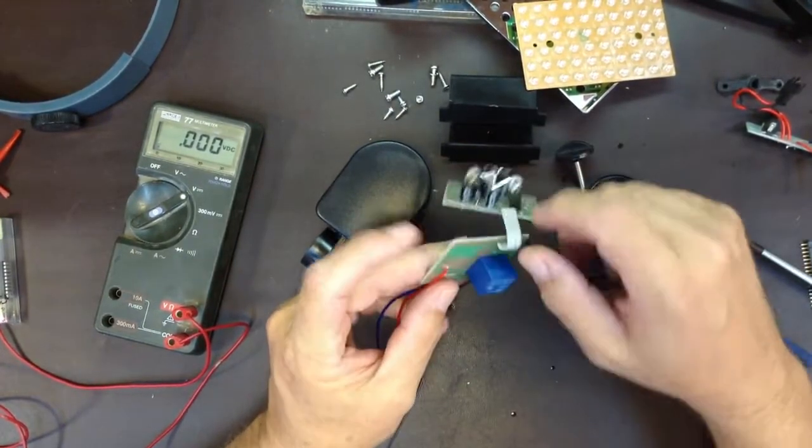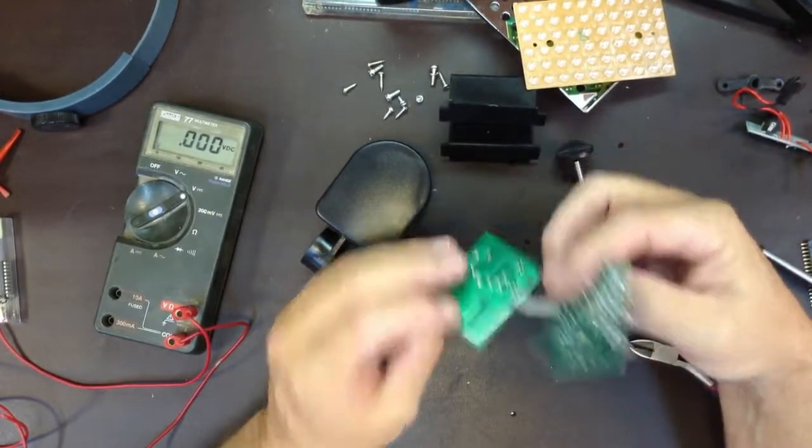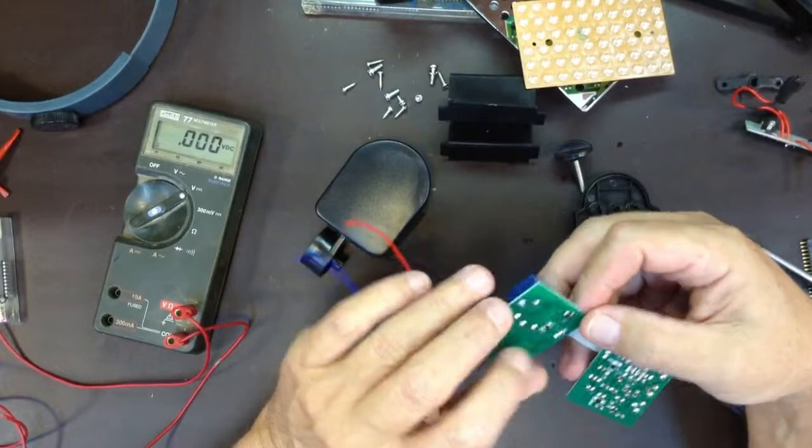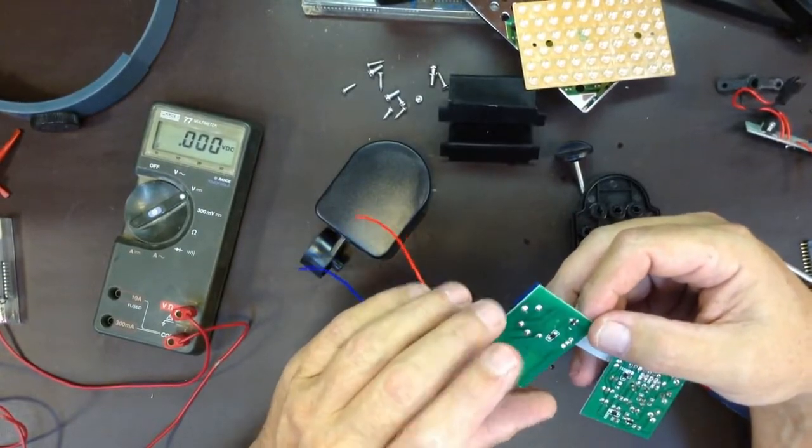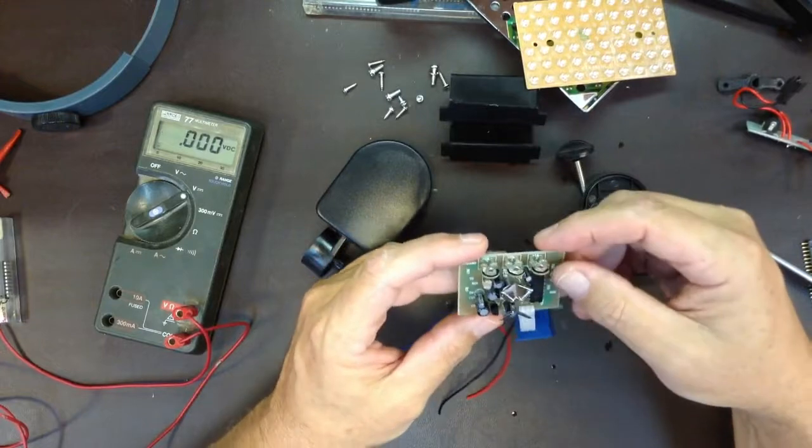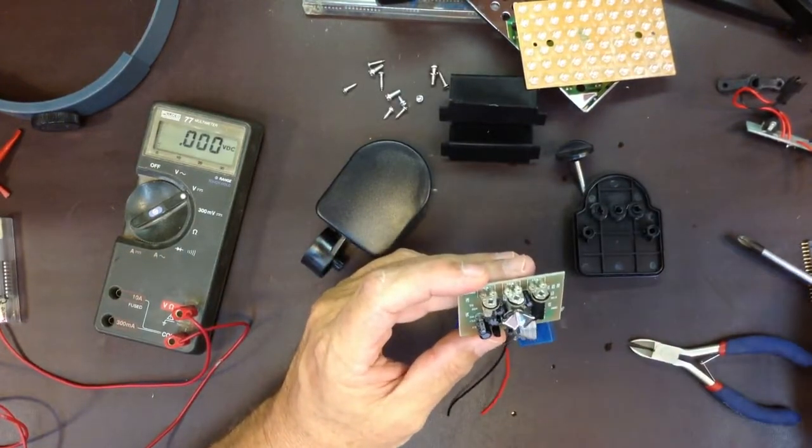It kind of surprises me that a mechanical relay is cheaper to manufacture than a big power transistor of some sort. There's a couple little surface-mount transistors on the back, which no doubt are driving the coil on this from the detector.